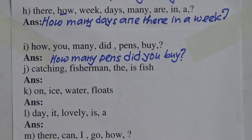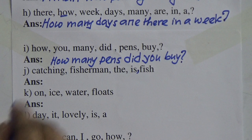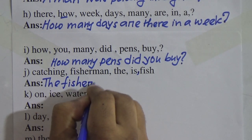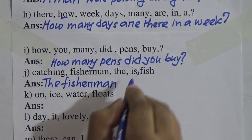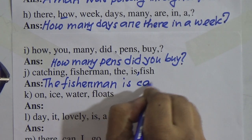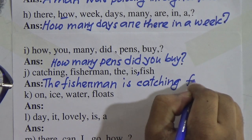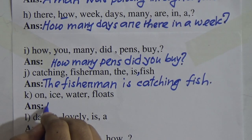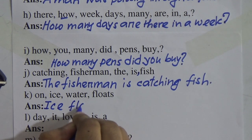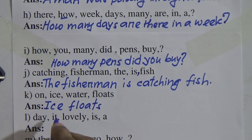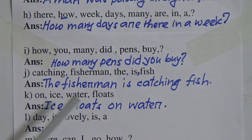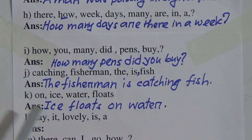Number J: 'catching fisherman, the, is, fish.' The subject is the fisherman. The fisherman — then verb: is. The fisherman is catching fish. Number K: 'one ice water floats.' It will be: ice floats on water. If you say water floats on ice, that is incorrect — water cannot float. So: ice floats on water. Correct sentence. Full stop.